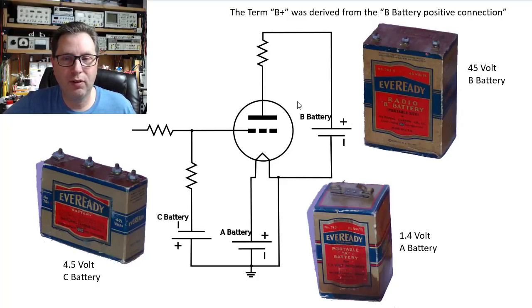But what we never lost was the term B+, which came from the B battery, the positive terminal here that you put onto the plate of the tube. And thus the high voltage connection that you put onto the plate of a tube these days is still called the B+ connection.